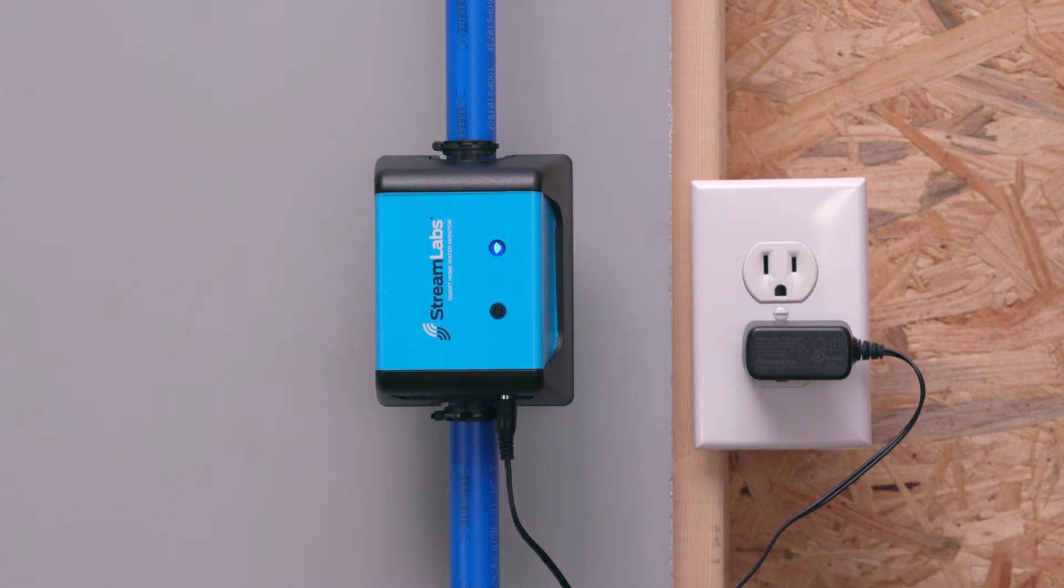The green light will be double flashing if the monitor is tight and installed properly on the pipe. If the green light is single blinking, this means the monitor cannot sense the pipe and either needs to be tighter, moved to a different location, or new pads installed on the bottom.